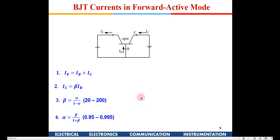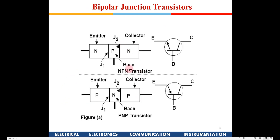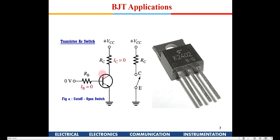Having understood these basics, you can also have a PNP transistor, which works in a similar fashion. The only difference is that holes are injected from the emitter side and majority of them are swept by the collector, so the majority carriers change.